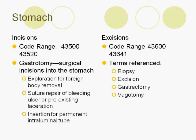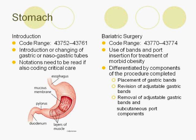Procedures on the stomach can include gastrotomy for exploration, suture repair of bleeding ulcer, or insertion for permanent tube placement. There are also excisions, which can be found in the index under biopsy, excision, gastrectomy, and vagotomy. Other procedures include introduction or changing of a G or NG tube. Please pay close attention to all notes. Also included is bariatric surgery, which is used for the treatment of morbid obesity.